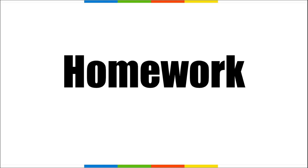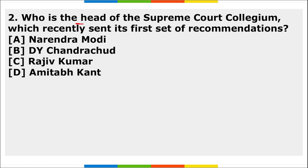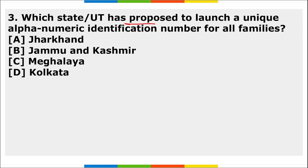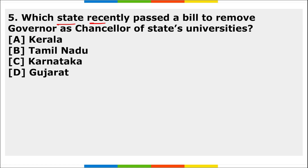Homework questions: Which country announced the historic nuclear fusion breakthrough? Who is the head of the Supreme Court collegium that recently sent its first set of recommendations? Which state has proposed to launch a unique alphanumeric identification number for all families? Which institution launched the International Climate Club? Which state recently passed a bill to remove the Governor as chancellor of state universities?